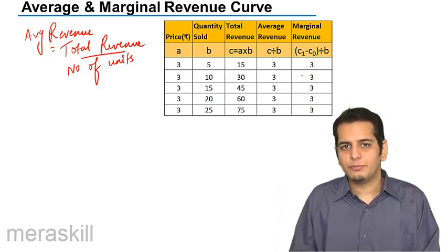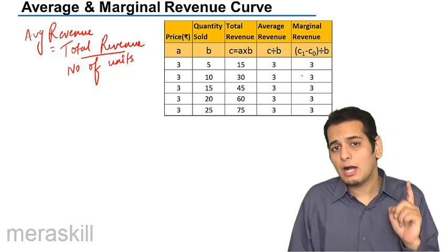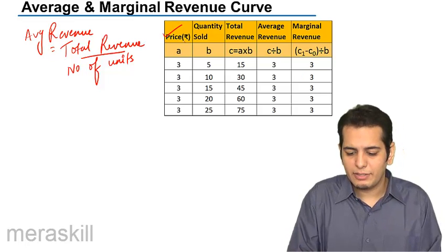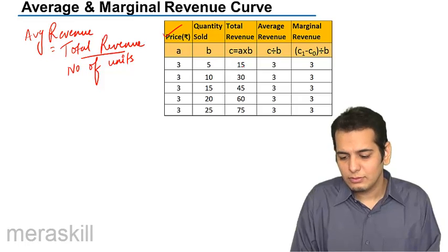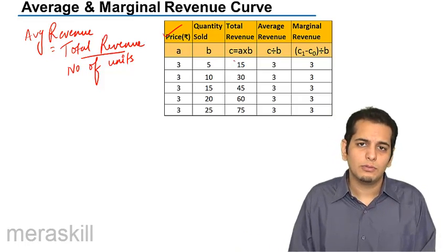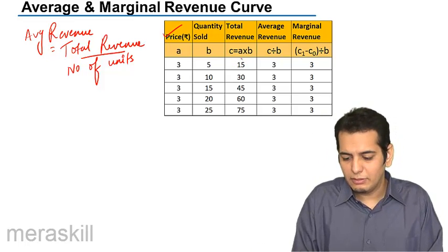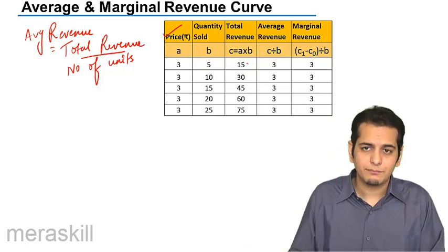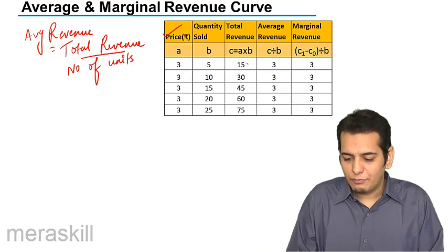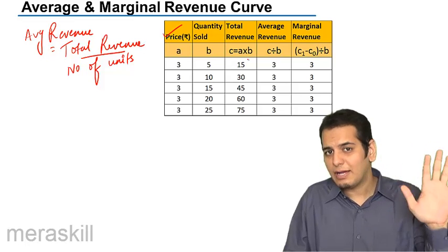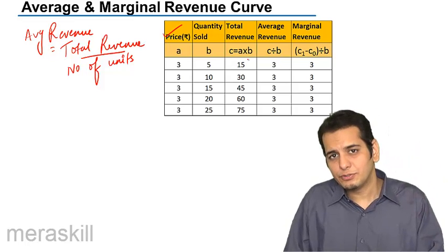Now let's see the average revenue. In a perfectly competitive market the price is fixed — it doesn't change, the firm can't change the price. So the price set by the market is 3, let's assume that. Now if he sells 5 units the total revenue will be 15, because total revenue is P into Q — price into the quantity of goods sold. So the average revenue would be 3. I've earned 15 rupees from selling 5 units, so on an average I have a revenue of rupees 3 from each unit sold.